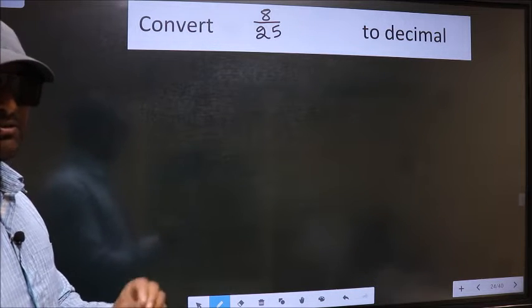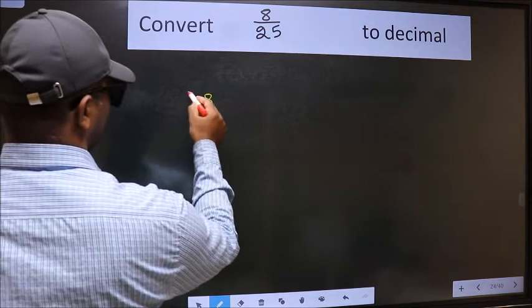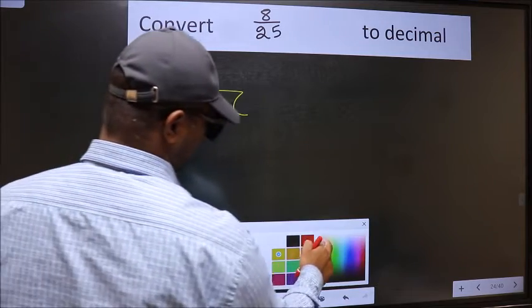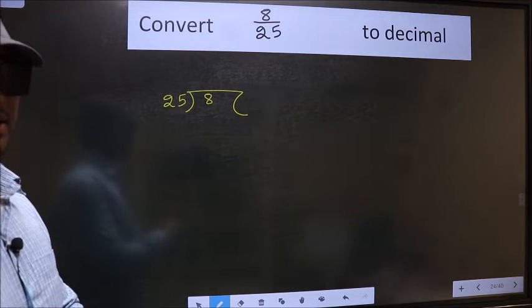To divide, we should frame it in this way: 8 here and 25 here. This is your step 1. Next.